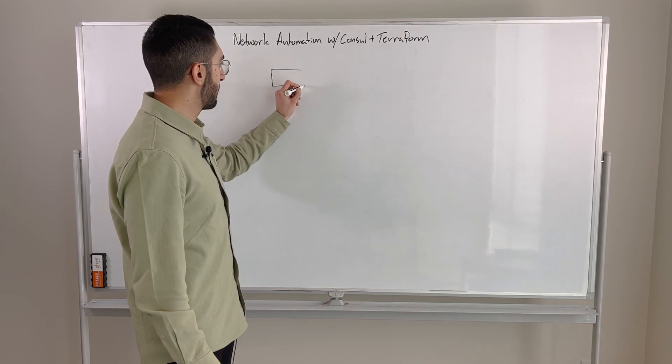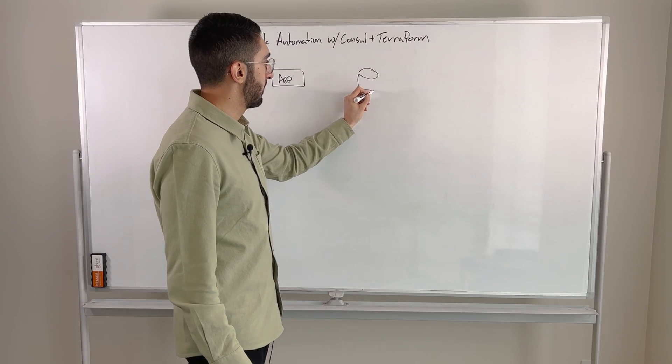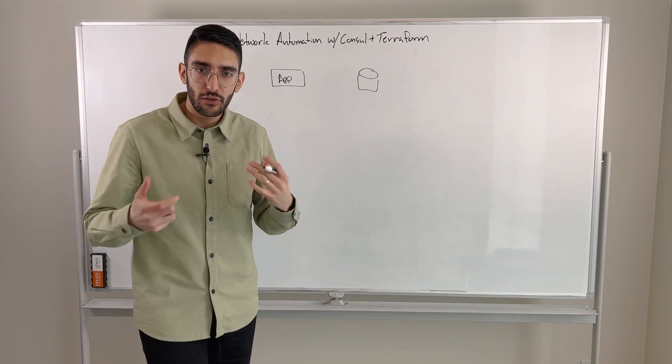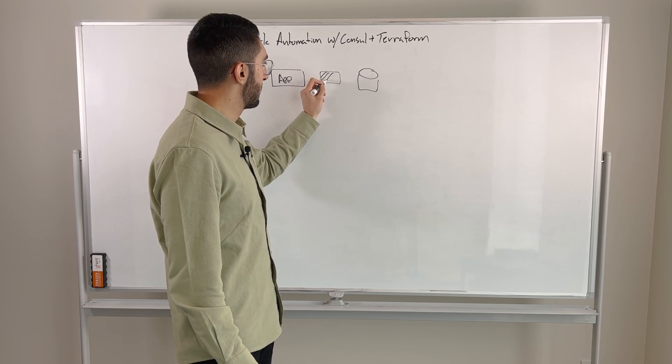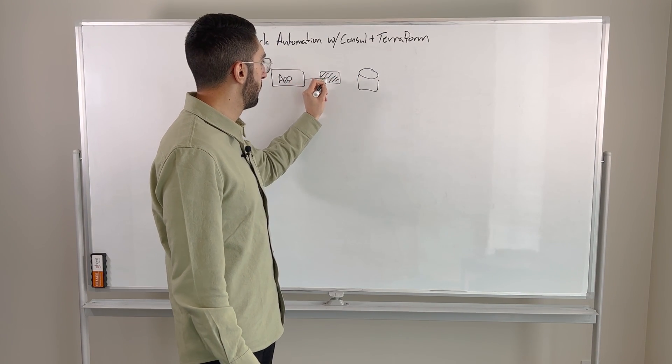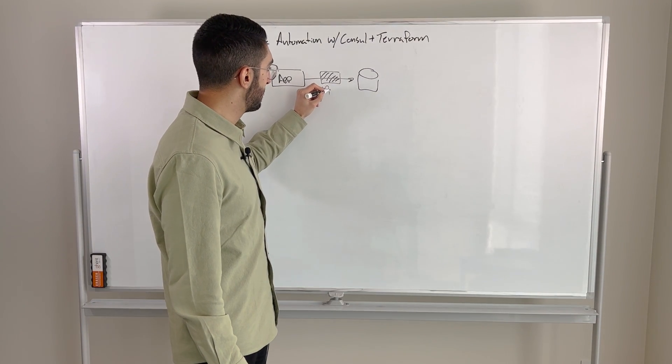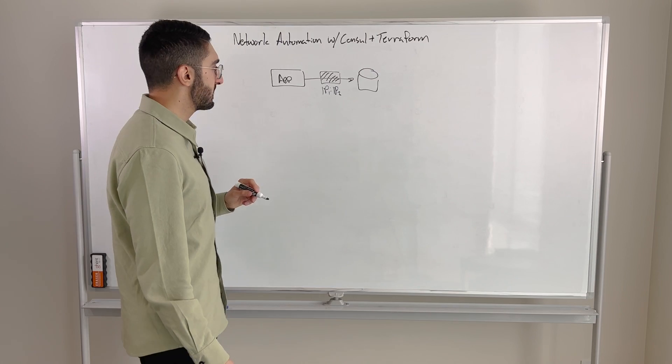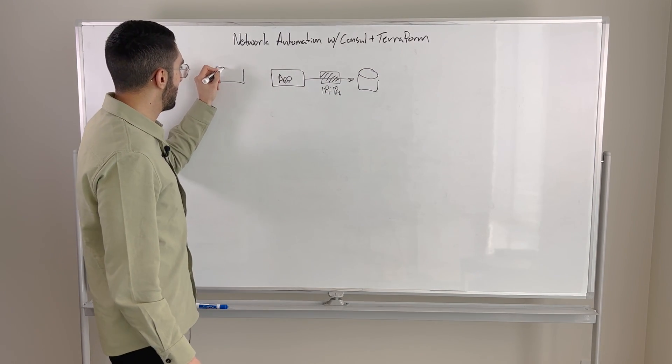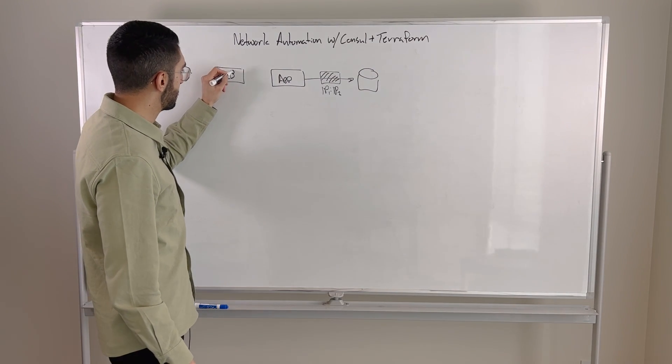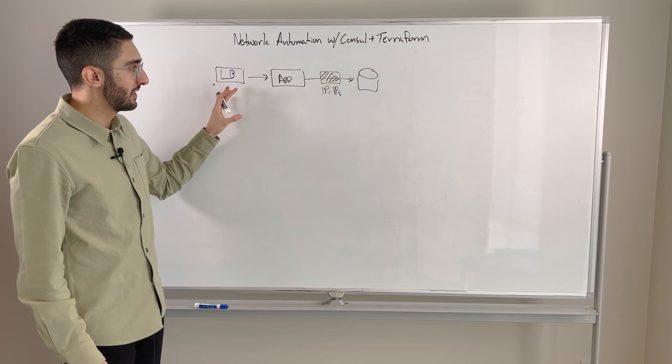So usually where this starts is we might have an application. That application is interfacing and using let's say a database. But of course there's an underlying network that needs to support this. So typically in between our application and our database we might put a firewall that's being used to govern access. This might impose a rule that says IP1 is allowed to talk to IP2. And then similarly in front of our application we might have a load balancer that's allowing us to spread traffic across multiple instances, manage failovers, etc. So this might be a relatively classic pattern.